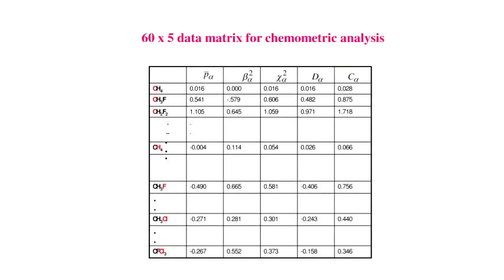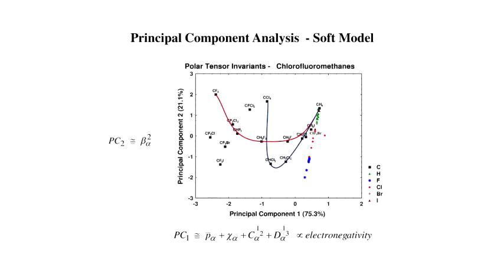We used these five invariants to try to understand what happens to the electronic structure. Here is our 60-by-5 data matrix for chemometric analysis, with the fluoromethanes and the five invariants. We did a principal component analysis, which gave the following results. The first principal component plotted against the second contains almost all the information. The first principal component is essentially a weighted average of four of the five invariants, while the other invariant approximates the second principal component.